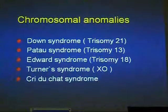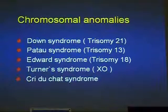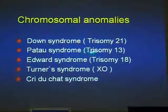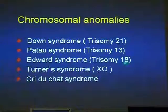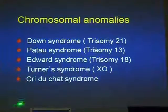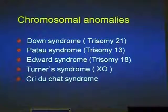The most common chromosomal abnormalities causing congenital cataract are Down syndrome (trisomy 21), Patau syndrome (trisomy 13), Edwards syndrome (trisomy 18), Turner syndrome (45,X0), and Cri-du-chat syndrome which is uncommon.